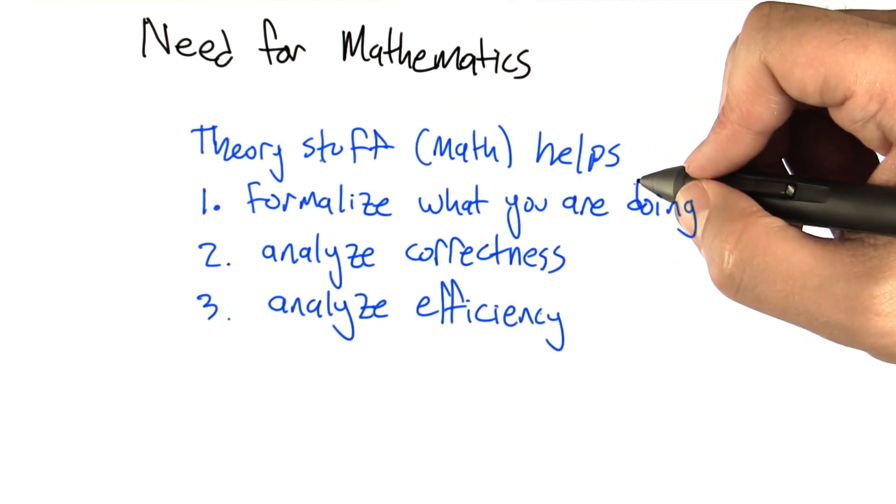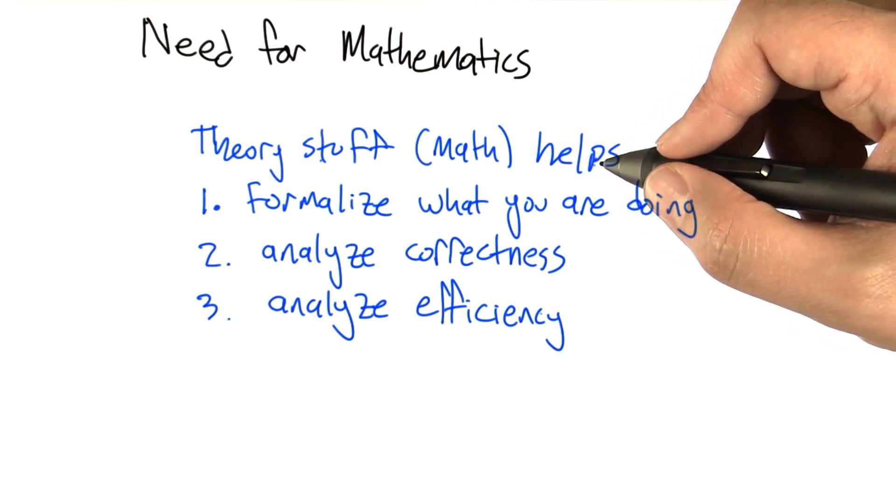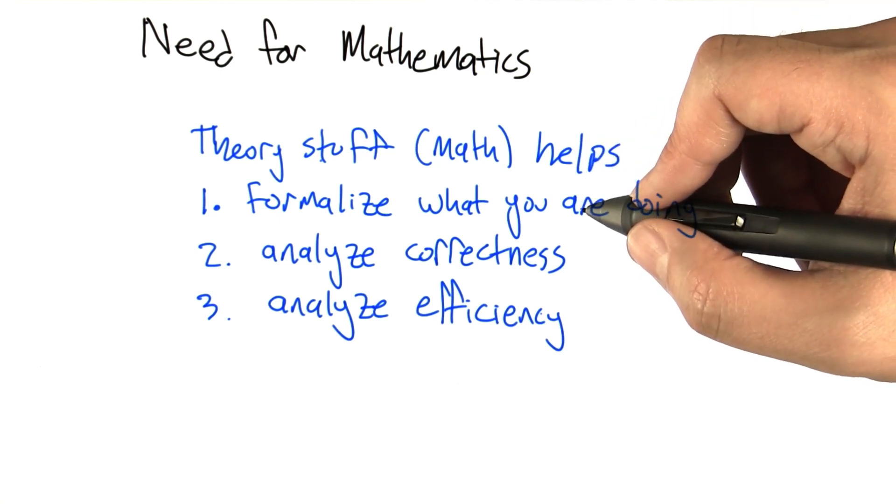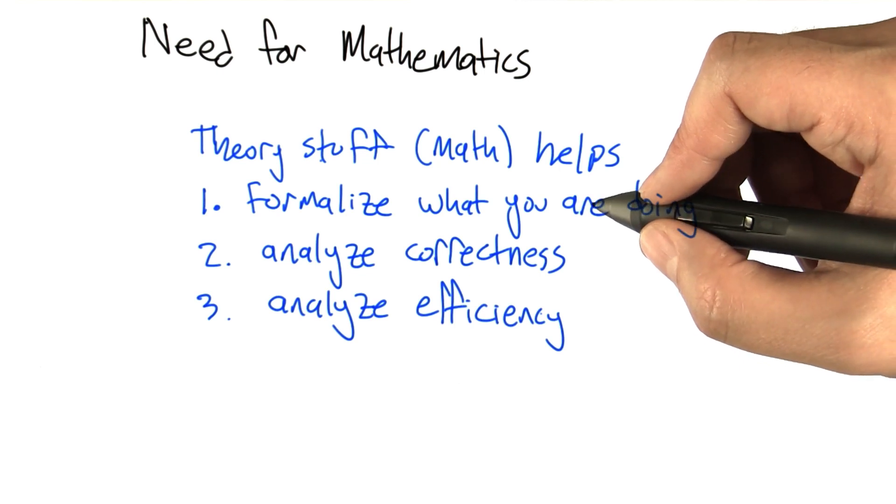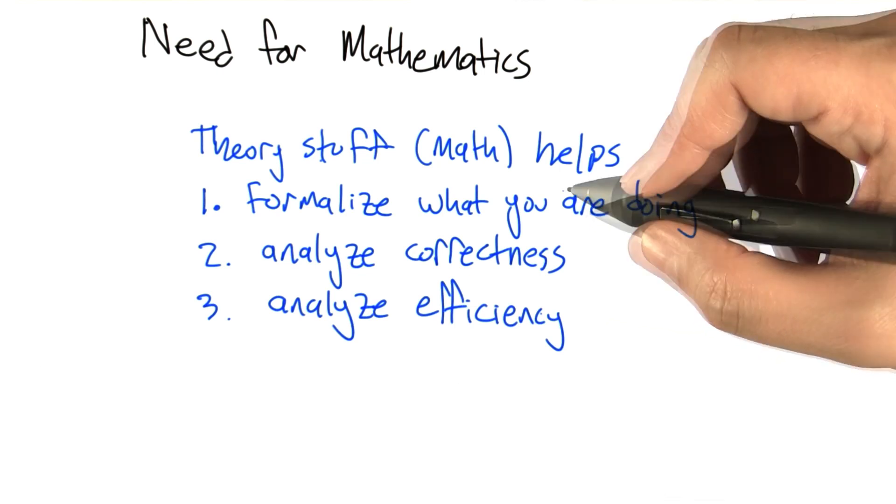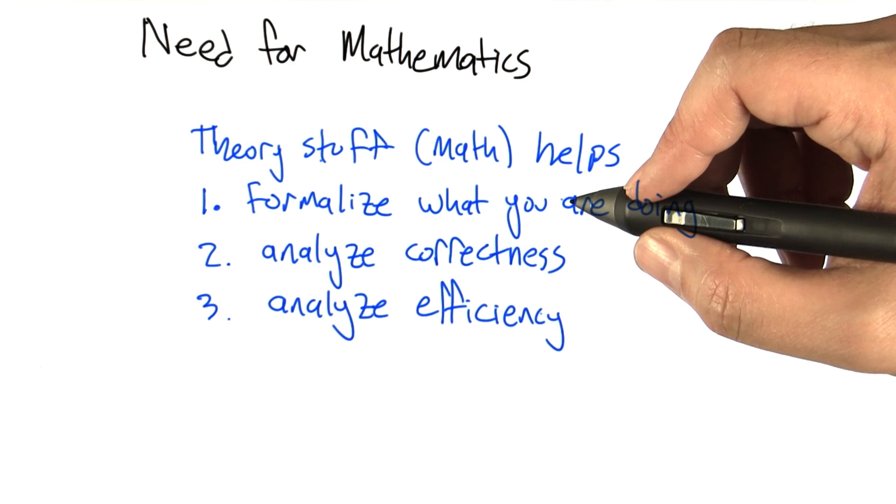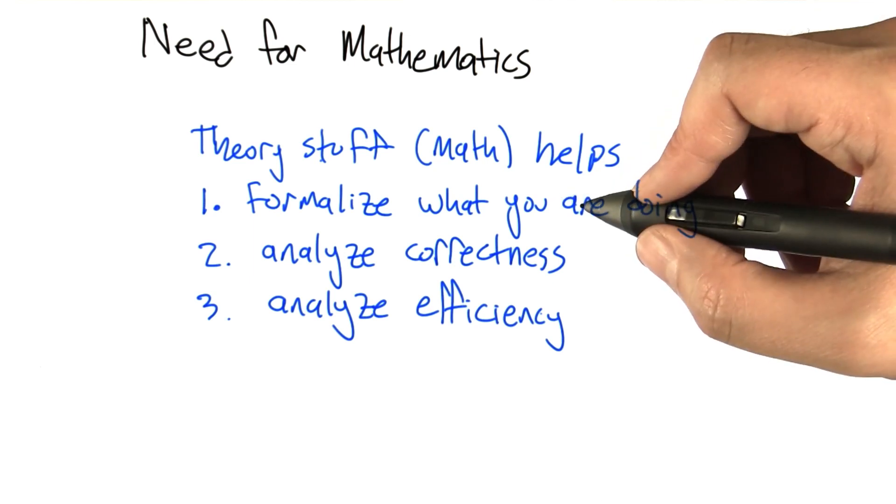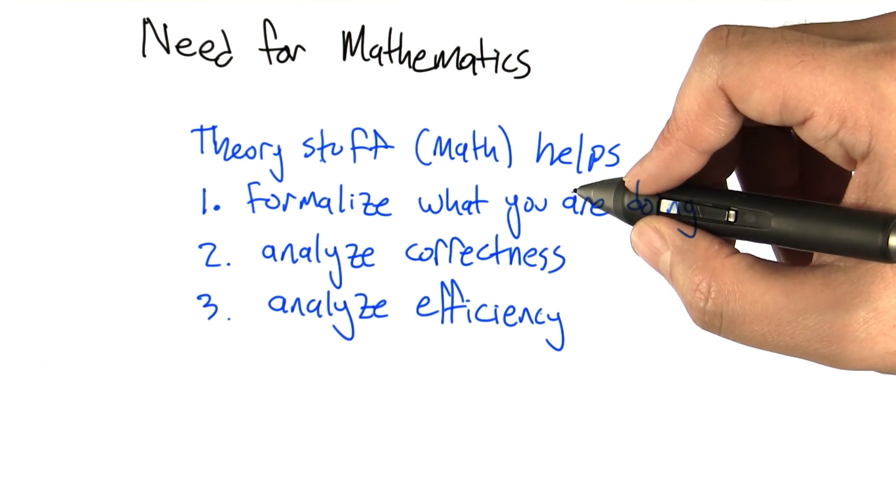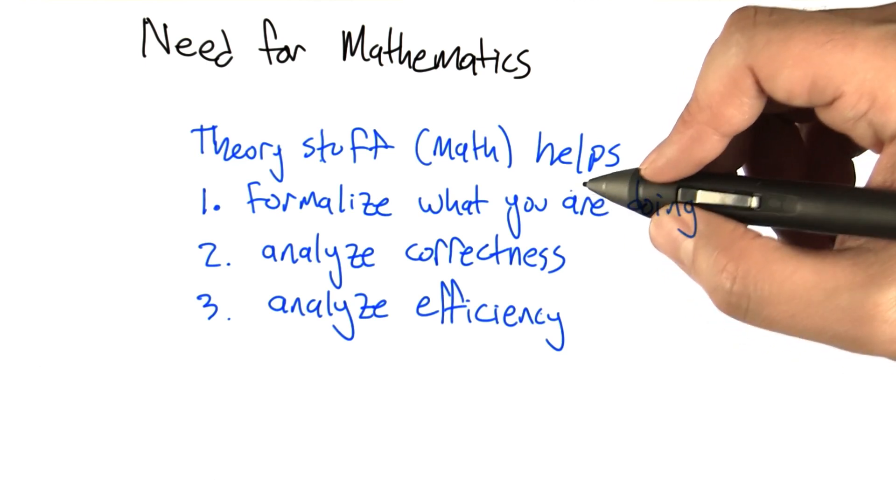I'd argue that there's three natural ways that theory stuff or math can really help. One is to just get you thinking clearly about what it is that you're trying to accomplish. It's very easy when you're in the depths of writing code to lose track of what it is that you want the code to actually do. So just thinking formally about what you're doing is something that using your mathematical background can help with.